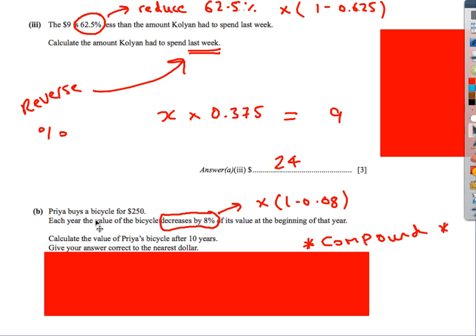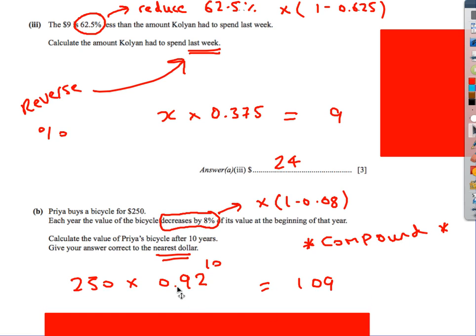Next one. Buy a bicycle for $250. Decreased by 8% every single year. We start with 100%, take away 8%. What's going to be left? 92%. So we're going to times by 0.92. It's compounding. Every single year, we're reducing it by another 8%. We're starting with 250.